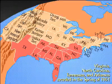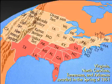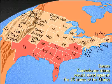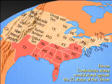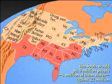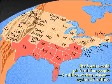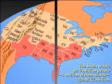Virginia, North Carolina, Tennessee, and Arkansas seceded in the spring. The Confederacy had 11 states, the Union 23. The South had a population of 9 million — 3 million of them slaves — against 22 million in the North.